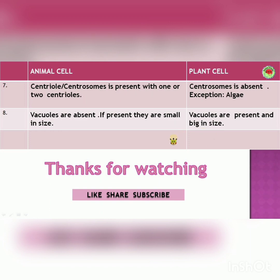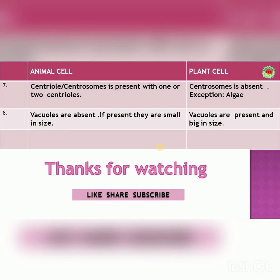Here is a trick to learn differences: fully learn one side first, then just write the opposite for the other side. Choose whichever side feels easier — for example, if plant cell is easier, learn that side and write the opposite for animal cell. This way you can easily write the differences. If you liked this video, please hit the like button and subscribe to my channel, Scienceoholic. Thanks for watching, bye for now.